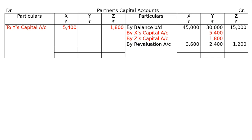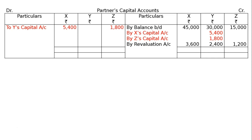Next, profit on revaluation credited: buy revaluation account — X 3,600, Y 2,400, Z 1,200. Y's total credit side balance comes to 39,600. Transfer Y's balance to Y's loan account: to Y's loan account 39,600.